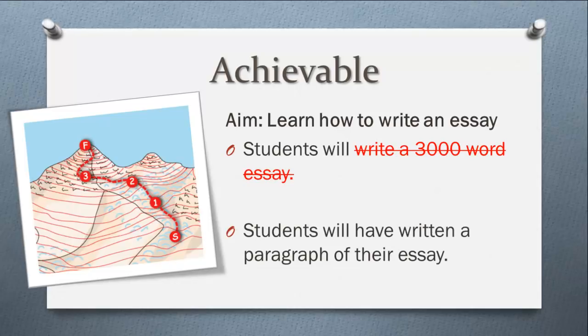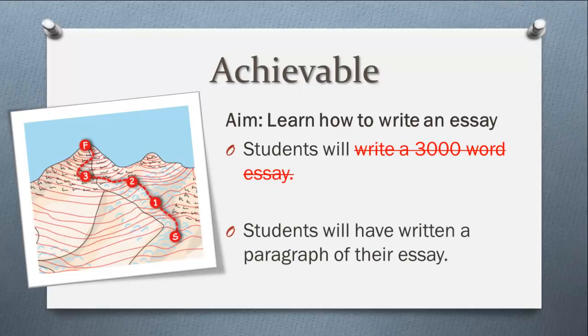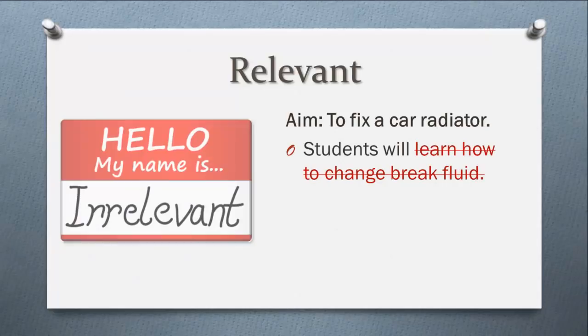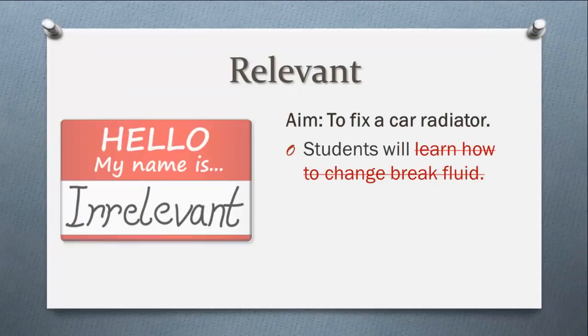Now we need to make sure our objectives are relevant. If we are trying to teach students how to fix a car radiator, we might say students will learn how to change brake fluid. Even though this is related to fixing a car, it has nothing to do with the radiator and so is not relevant. So instead, we could say that students will learn how to safely fill the radiator with water.